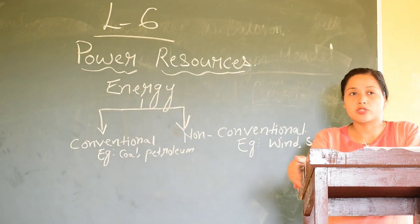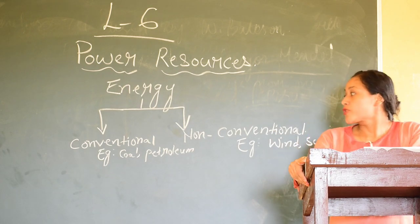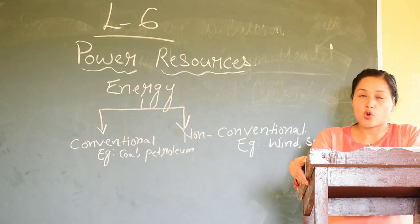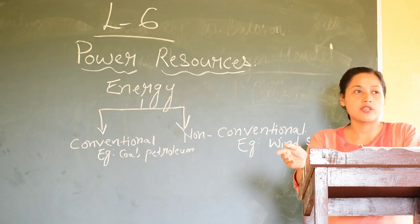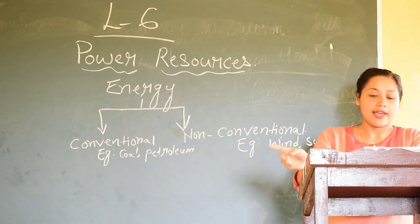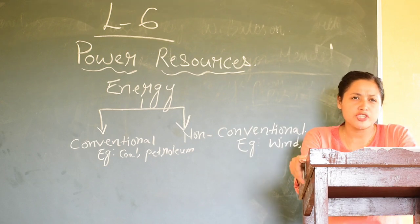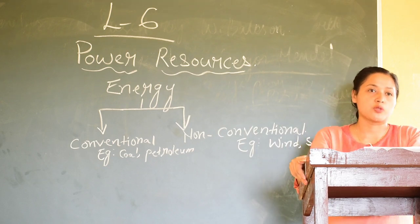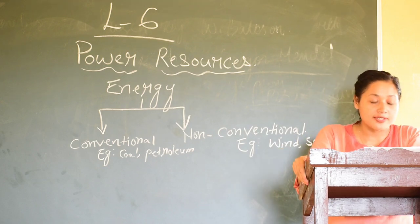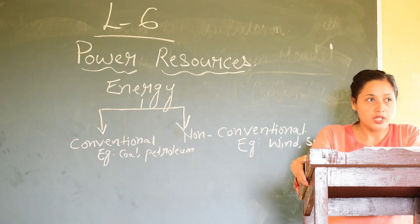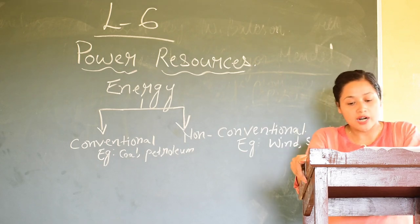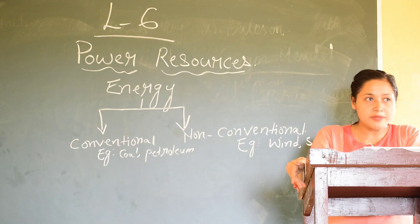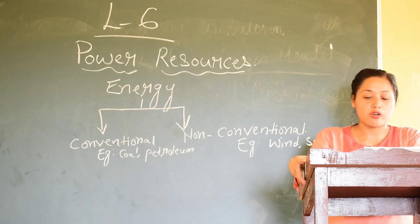I have written on the board. Conventional source of energy — examples are coal and petroleum. Non-conventional source of energy — we can give examples of wind and sun. Conventional source of energy refers to those resources that have been used for many years and are very limited. Whereas non-conventional source of energy are those that are abundant, not limited, and they are eco-friendly.